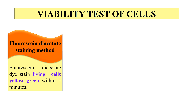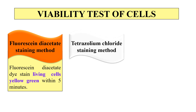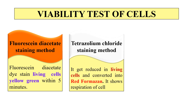The second method is the tetrazolium chloride staining method. Here we use the dye tetrazolium chloride. This dye stains the living cells and converts them to red formazan, and it also shows the respiration of cells. By this method we can identify the living cells.